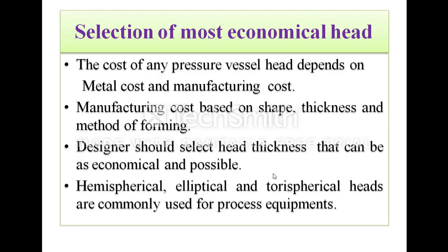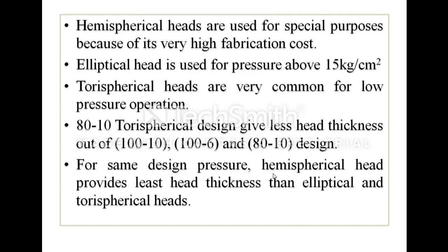The selection of the most economical head depends upon cost. The cost of any pressure vessel head depends on the metal cost and the manufacturing cost. Manufacturing cost in turn depends on the shape, thickness, and method of forming. The designer should select the head thickness that is as economical as possible. Hemispherical, elliptical, and torispherical heads are commonly used for process equipment. Hemispherical heads are used for special purposes because of their very high fabrication cost. Elliptical heads are used for vessels above 15 kg per cm². Torispherical heads are the most common pressure vessel heads. The 80-10 torispherical design gives the least head thickness compared to the others. For the same design pressure, a hemispherical head provides the least head thickness compared to elliptical and torispherical heads, but the cost is also very high.